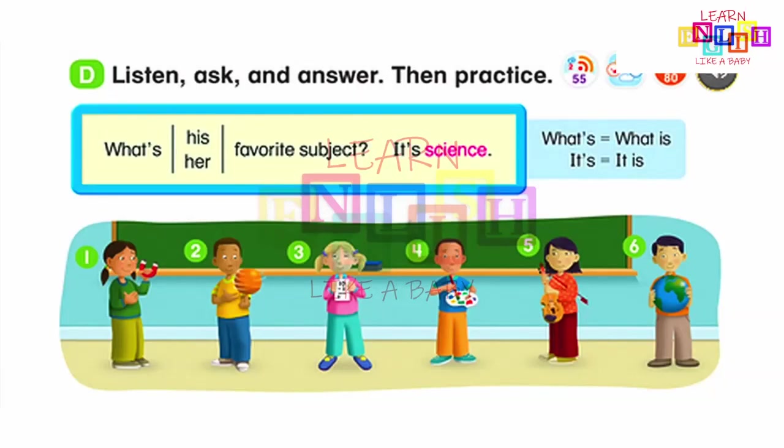One: What's her favorite subject? It's science. Two: What's his favorite subject? It's P.E. Three: What's her favorite subject? It's math. Four: What's his favorite subject? It's art. Five: What's her favorite subject? It's music. Six: What's his favorite subject? It's social studies.